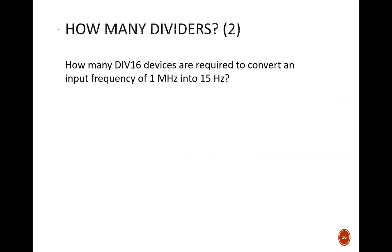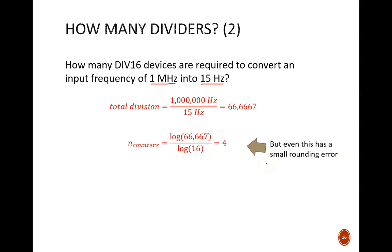Let's apply that formula to help with a slightly more difficult question. How many div 16 devices are required to convert an input frequency of 1 megahertz into 15 hertz? Try this one out on your own. The first thing to do is identify the total division desired, which isn't given directly here. Instead, we compute it by dividing the original frequency, 1 megahertz, by the desired frequency, 15 hertz. You see this here, with that prefix mega expanded to show its number, 1 million. The result is approximately 67,000. Now we apply the formula. The numerator shows log of total division. The denominator shows log of each device's division. The result is four, so four counters are needed. But we do have a little problem, rounding error.